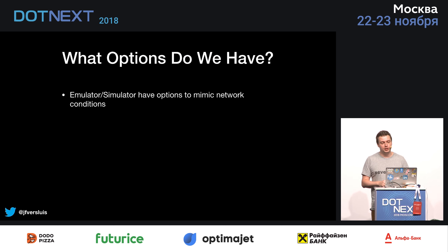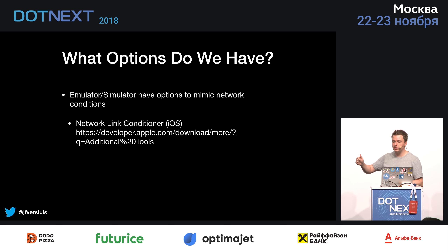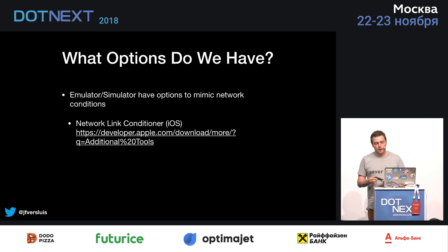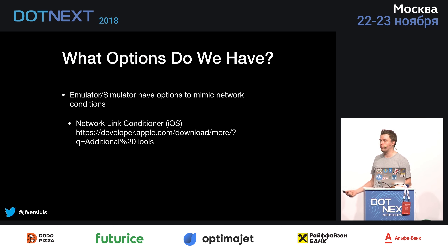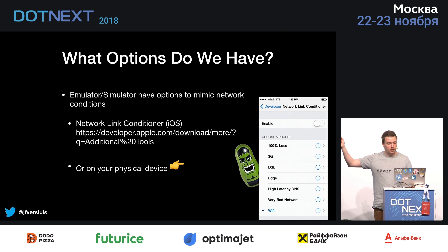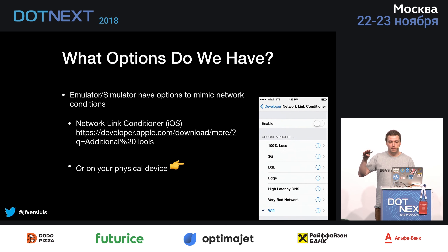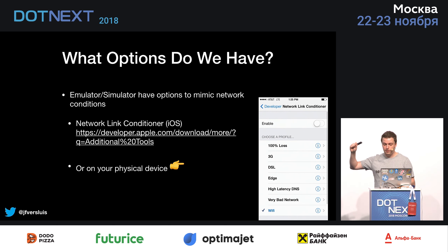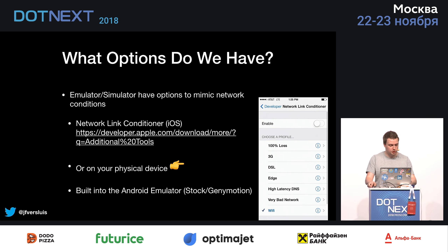The emulator and simulator do have options to mimic at least the network connections. For memory, there is something like 'simulate memory warning,' but that doesn't really impose the limits. There are options to mimic network conditions — you can say you want a bad connection. For iOS and macOS, you can use the network link conditioner, which simulates this for your whole network connection, so it also works for the simulator. You also have this on your physical device with profiles like 100% packet loss, 3G, and various other variations.